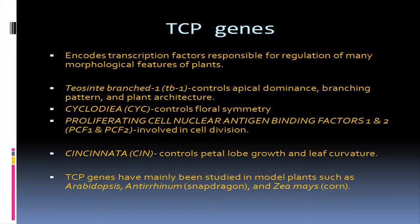Now, that brings me to the genes that we are specifically looking at, which are TCP genes. TCP genes are genes that encode for transcription factors that cause transcription to happen. TCP is an acronym: T stands for Teosinte branch 1, which controls apical dominance, branching pattern, and plant architecture; C stands for cycloidia, which controls floral symmetry; and P stands for proliferating cell nuclear antigen binding factors 1 and 2, which are involved in cell division. There is also another gene called Cincinnati, which controls petal lobe growth and leaf curvature in the plants.